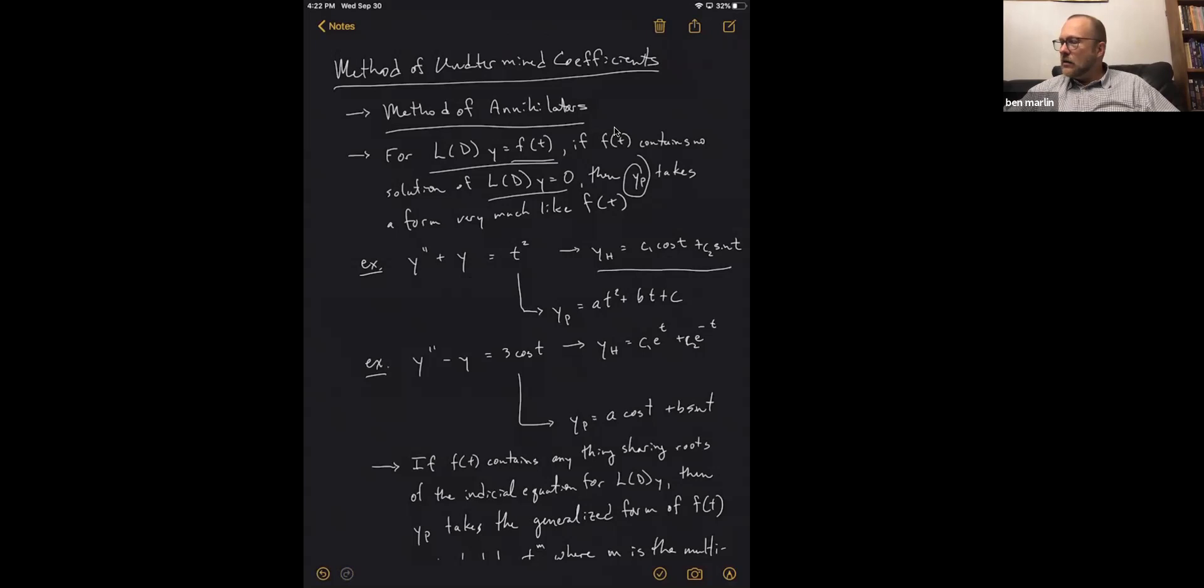And we know that that is trig functions and t squared is a polynomial. So because those are not really similar, then, well, put it like this, they don't share the same r values. The r values for polynomials are always zero. The r values for sines and cosines are always imaginary numbers. So because those don't share any, we put together what our y sub p should be. And we say, that's a t squared.